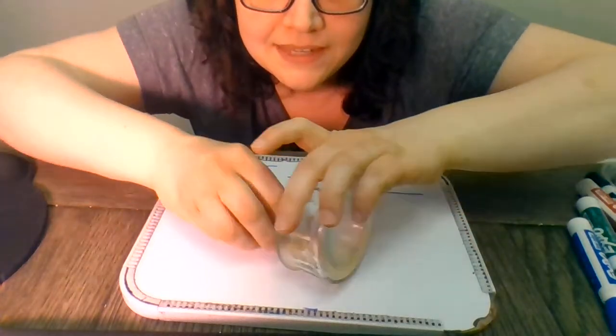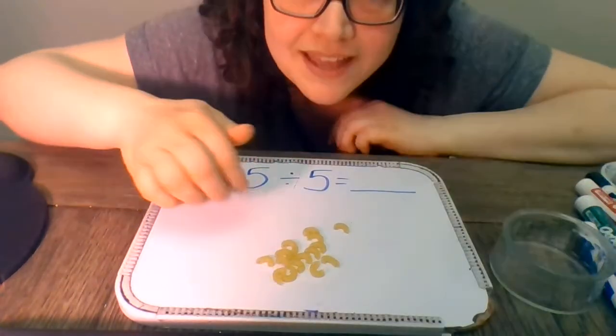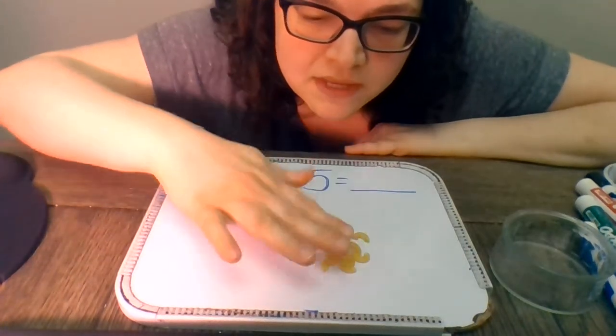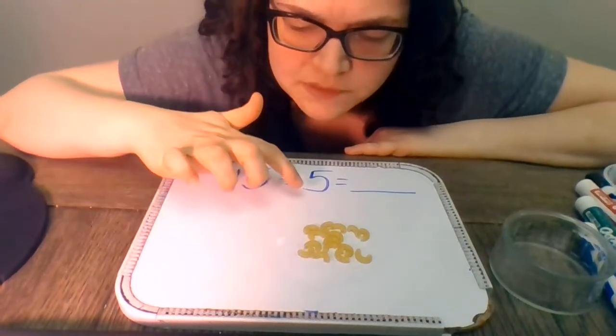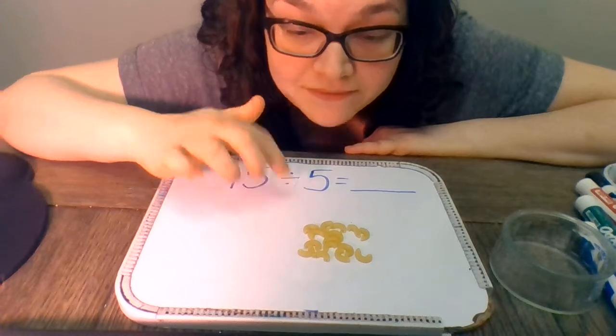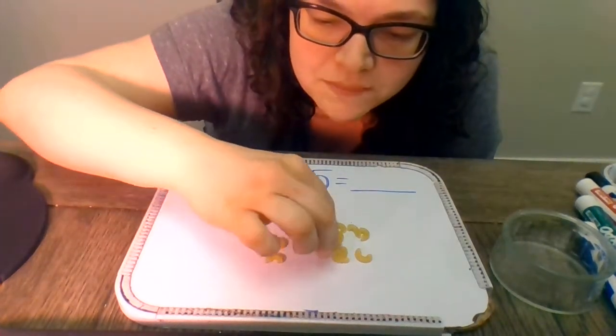So here's our little macaronis. I counted them ahead of time. There's 15 there. So you'll remember what we do is we make groups of 5. And then we'll see how many groups we have made.